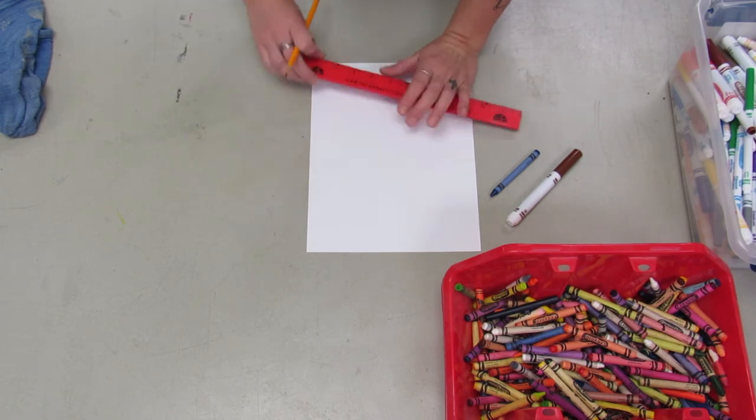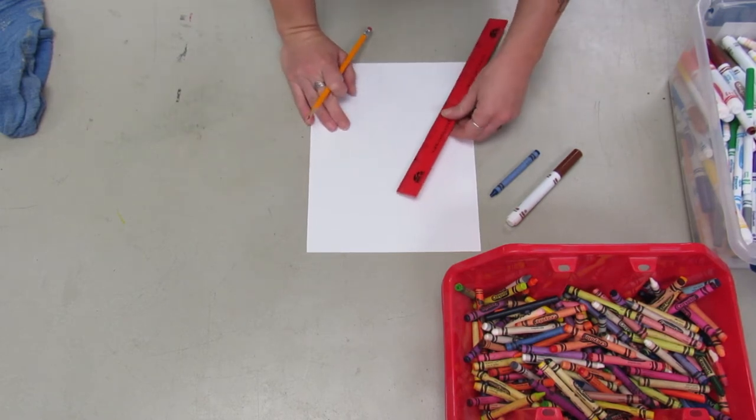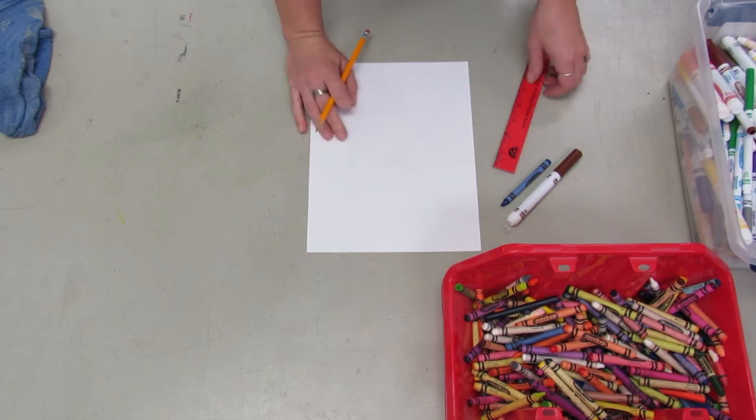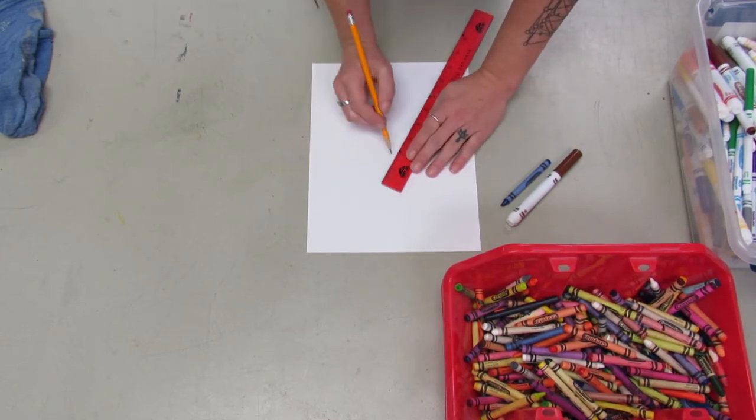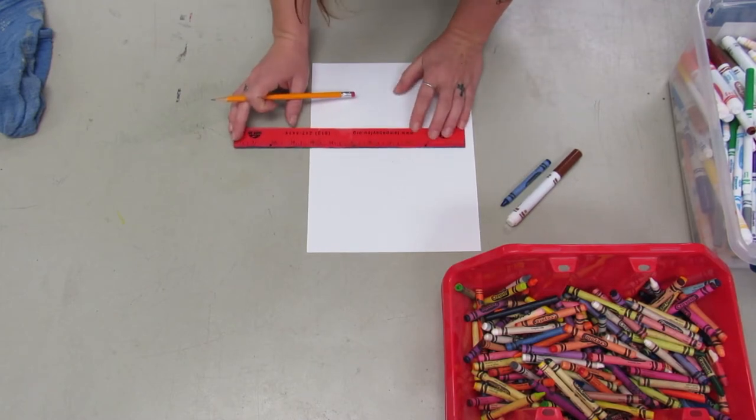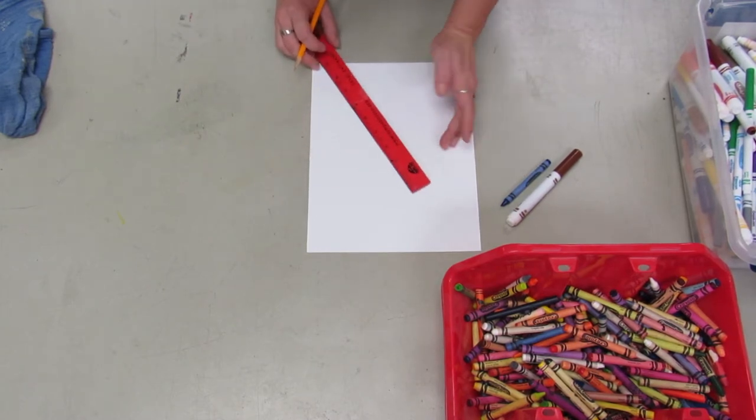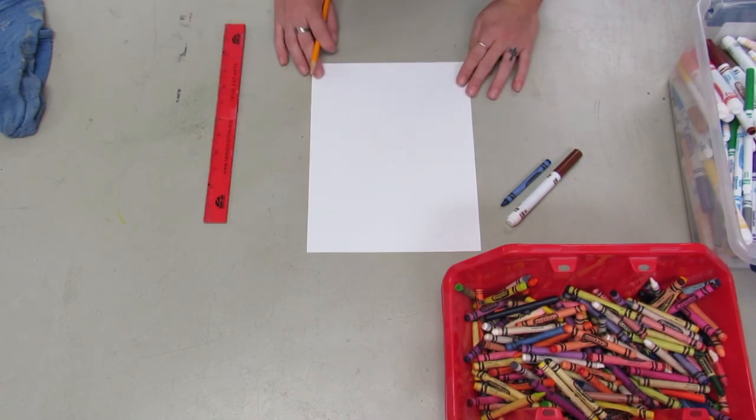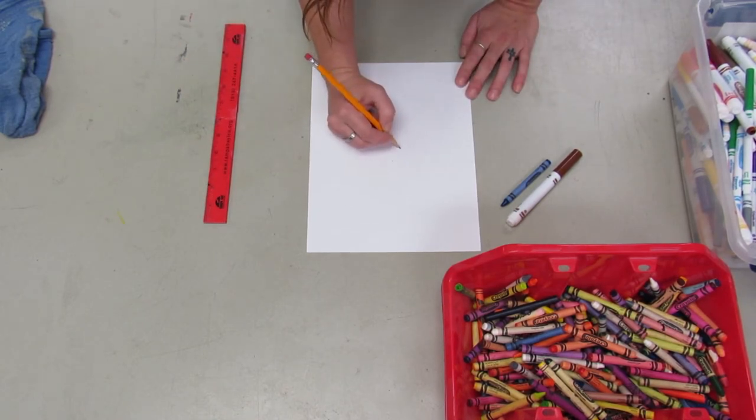The first thing we're gonna do is draw a horizon line—that is that straight line across way out where it looks like the water meets the sky when you go to the beach. That's called the horizon. Then we're gonna draw a small dot in the middle of our horizon line, and that's gonna be what we line our ruler up with to make everything look like it's in perspective.